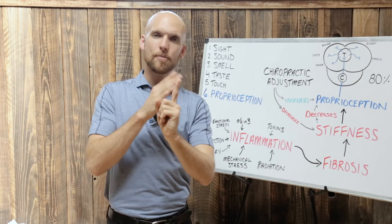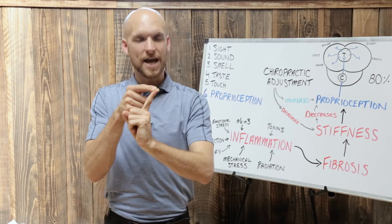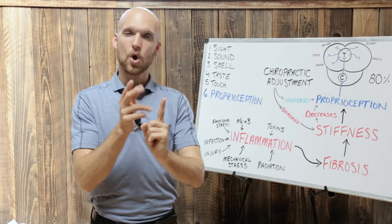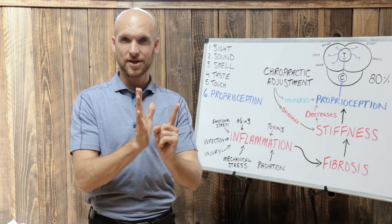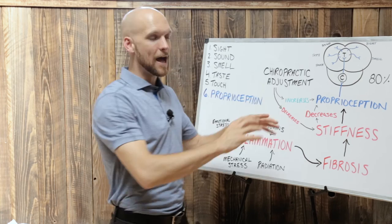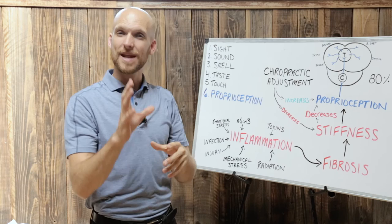The chiropractic adjustment, we are specifically trained to go to the passive range of motion and go very quickly and comfortably specifically into the adjustive range of motion or the paraphysiological space without going to the area where you would have an injury or damaged tissue. By doing this, you stimulate the receptors of proprioception, allow the brain to reconnect accurately with where the joints, muscles, tissues are in the body.